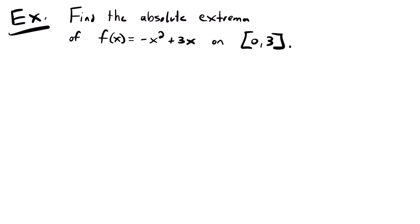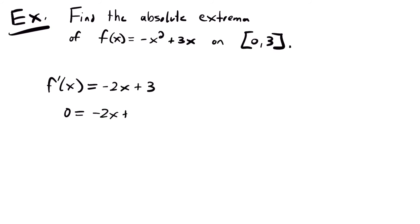Example: find the absolute extrema of f(x) = -x² + 3x on the interval [0, 3]. Following our guidelines, first find the critical numbers by taking the derivative and setting it equal to 0. The derivative is f'(x) = -2x + 3. Setting that equal to 0: 0 = -2x + 3, so 2x = 3, giving x = 3/2. That's our critical value.